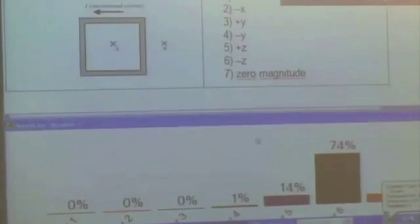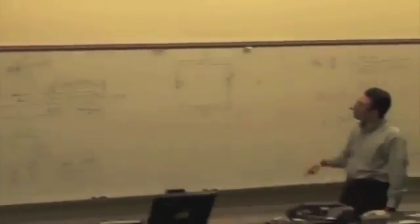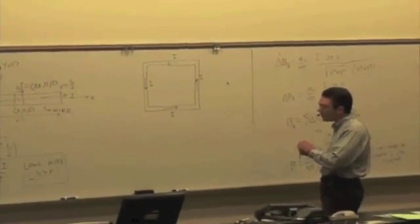Okay, most of us are saying negative z direction. That's actually going to turn out to be correct. The magnetic field outside of the loop but still in the plane of the page due to this loop of wire is going to be in the negative z direction.